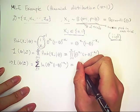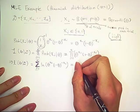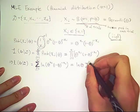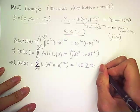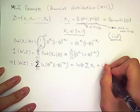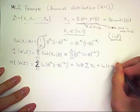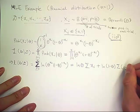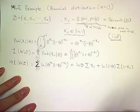So now this can be simplified to natural log of theta times sum of x sub i plus natural log of one minus theta times sum of one minus x sub i.